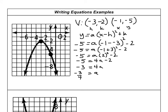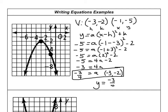Using a equals negative three-fourths and the vertex, I plug into the equation: y equals negative three-fourths times the quantity x plus 3 — because it's x minus negative 3 — squared, minus 2. And you're done.